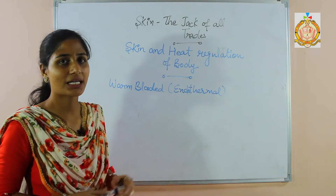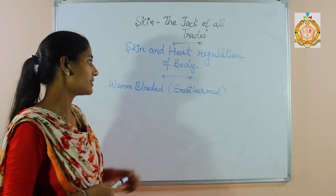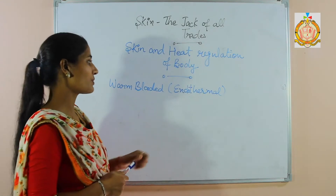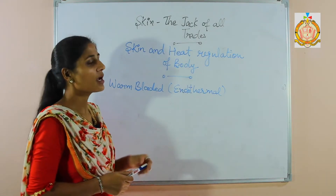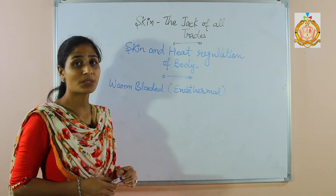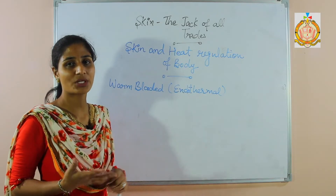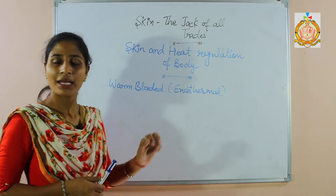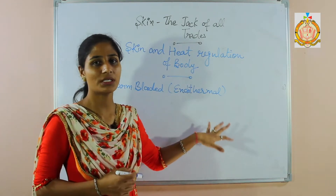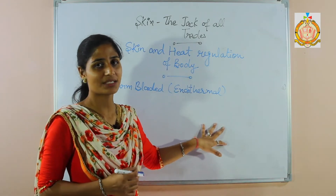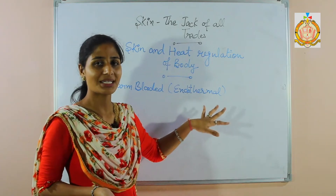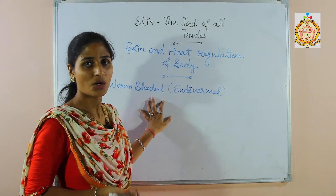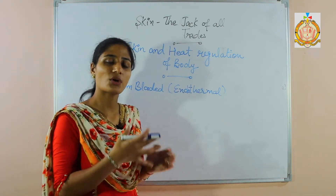The first topic is the skin and the heat regulation of the body. Human beings are warm-blooded organisms. Warm-blooded means they are also known as endothermal. They are called endothermal because heat is produced inside their body, and that is why they are able to survive in both cold and warm weather.